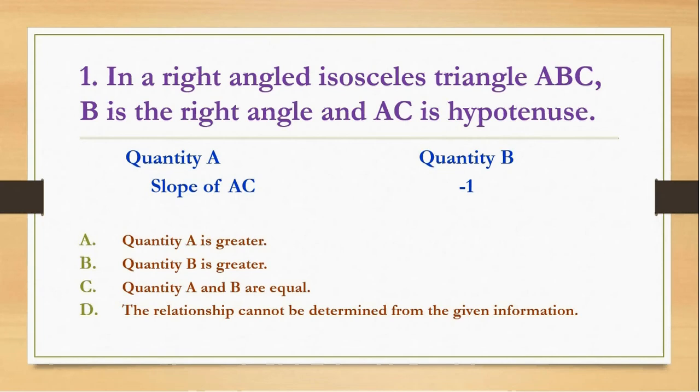So the first question is about the right angle isosceles triangle. In a right angle isosceles triangle ABC, point B is the right angle and AC is hypotenuse. This is a quantitative comparison question. We have to compare these two quantities: slope of hypotenuse AC and minus one.